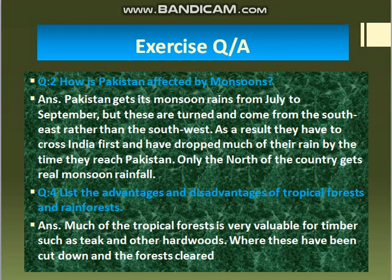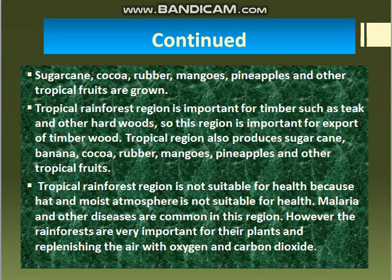Where tropical forests are cleared, crops such as sugarcane, cocoa, rubber, mangoes, pineapples, bananas, and other tropical fruits are grown. Tropical rainforests also produce sugarcane, bananas, cocoa, rubber, mangoes, and other tropical fruits. These crops are characteristic of the tropical rainforest region.